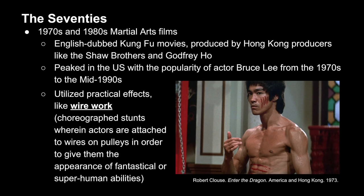Another genre that emerged in the 1970s was martial arts films, which utilized practical effects like wire work — actors and stunt people performing choreographed stunts on wires attached to pulley systems — giving the appearance of fantastical or superhuman abilities. These films began as English dubs, originally in another language, and came primarily from Hong Kong producers like the Shaw Brothers and Godfrey Ho, peaking in the United States from the 1970s through the 1990s alongside actors like Bruce Lee. However, as American filmmakers created their own versions, they crossed into cultural appropriation and exploitation, borrowing from a culture they didn't share and often creating caricatures while typecasting Asian Americans into stereotypical roles.